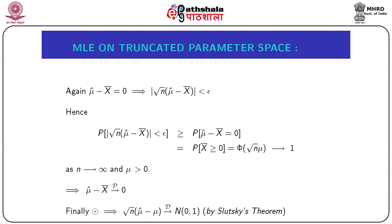Where Φ denotes the standard normal CDF. This implies μ̂ − x̄ → 0 in probability. Hence from expression (*), by Slutsky's theorem — which states that if X →_p c and Y →_d Z then X + Y →_d Z + c — we get √n(μ̂ − μ) → N(0,1) in distribution.